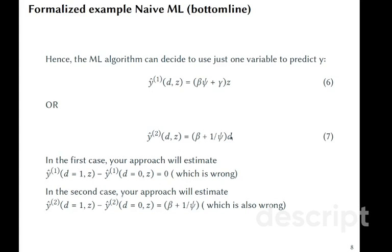Whereas in the second case, d is here, the treatment effect you will estimate will be β + 1/c. So this term is the omitted variable bias, and this is also wrong.